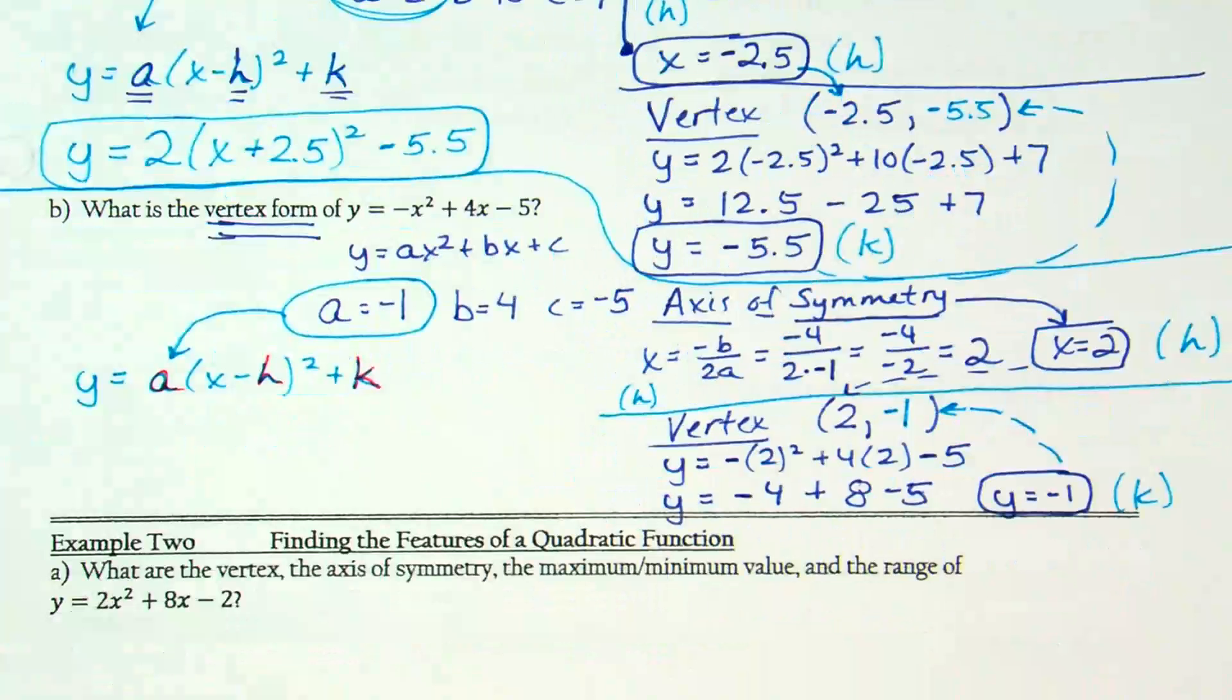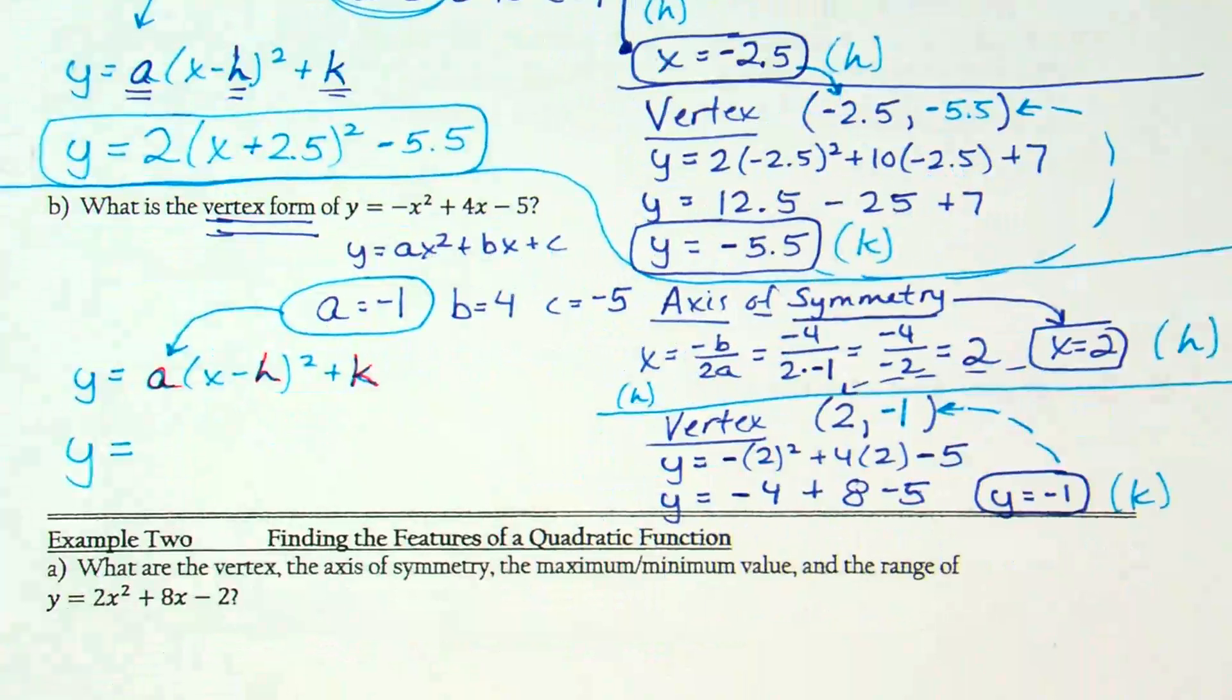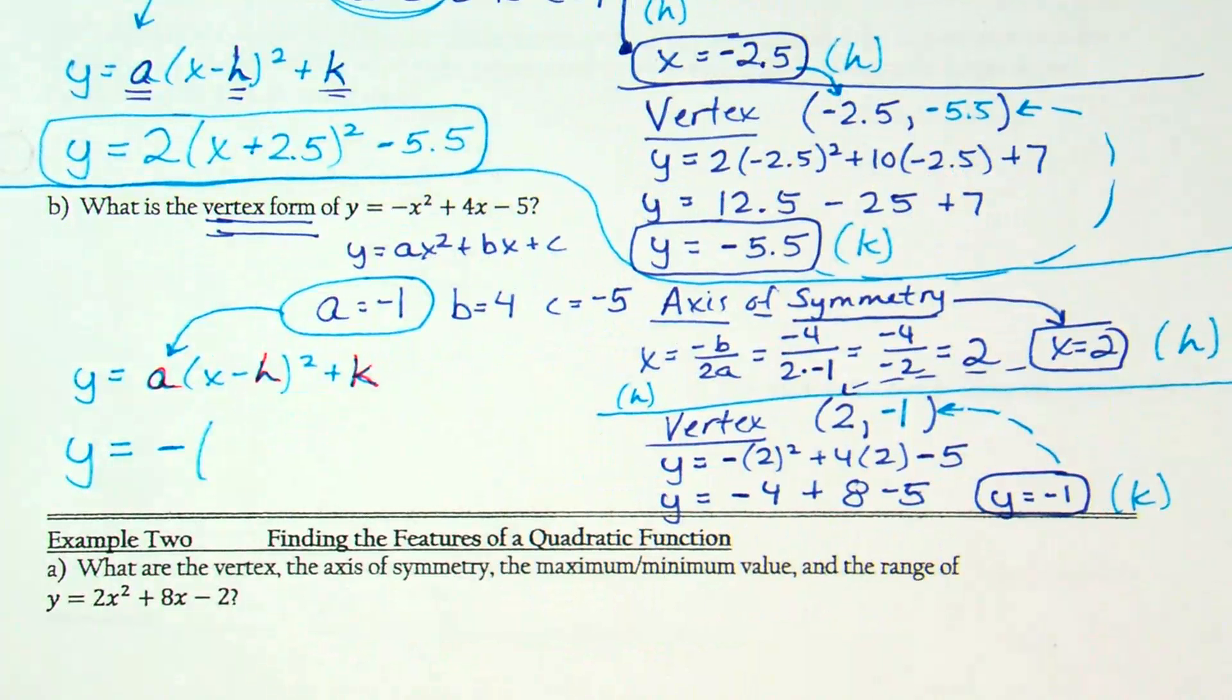I just found y to be negative 1. Two important things about that negative 1: it's k and the second half of the vertex. Final equation: Y equals, what's A? I'm not actually going to write negative 1, just a negative. In parenthesis, x minus 2 squared, don't forget your square, plus k, which is minus 1.